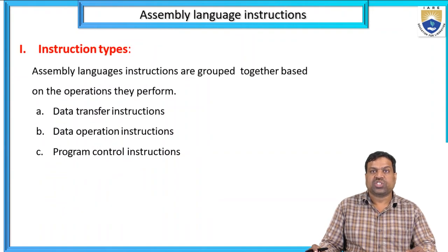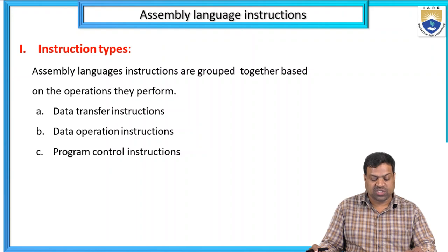First one is the instruction type. Assembly Language Instructions are grouped together based on the operations they perform: data transfer instructions, data operation instructions, and program control instructions.